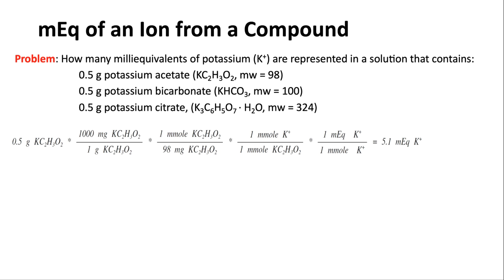For potassium acetate (formula weight 98): start with 0.5 g, convert to milligrams (×1000), then to millimoles (÷98 mg/mmol). Formula shows 1 K per potassium acetate molecule, so 1 mmol K per 1 mmol compound. Potassium's valence is 1, so 1 MEQ per 1 mmol. Result: 5.1 milliequivalents of potassium.